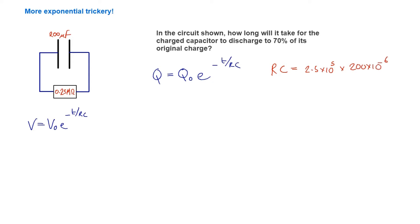That's 200 × 10⁻⁶ farads. If we evaluate that, it's 50 seconds. So we've got RC.